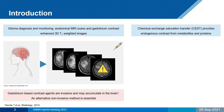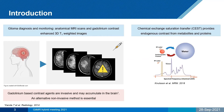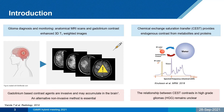On the other hand, CEST — chemical exchange saturation transfer — provides endogenous contrast from metabolites and proteins. It works by applying an RF label specific to the pool of interest, and then the protons of that pool will exchange with those of water. However, the relationship between different CEST pool contrasts in high-grade gliomas remains unclear.